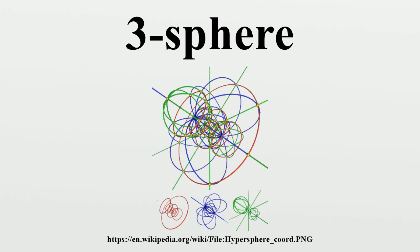Geometric Properties: The three-sphere is naturally a smooth manifold, in fact, a closed-embedded submanifold of R4. The Euclidean metric on R4 induces a metric on the three-sphere giving it the structure of a Riemannian manifold.